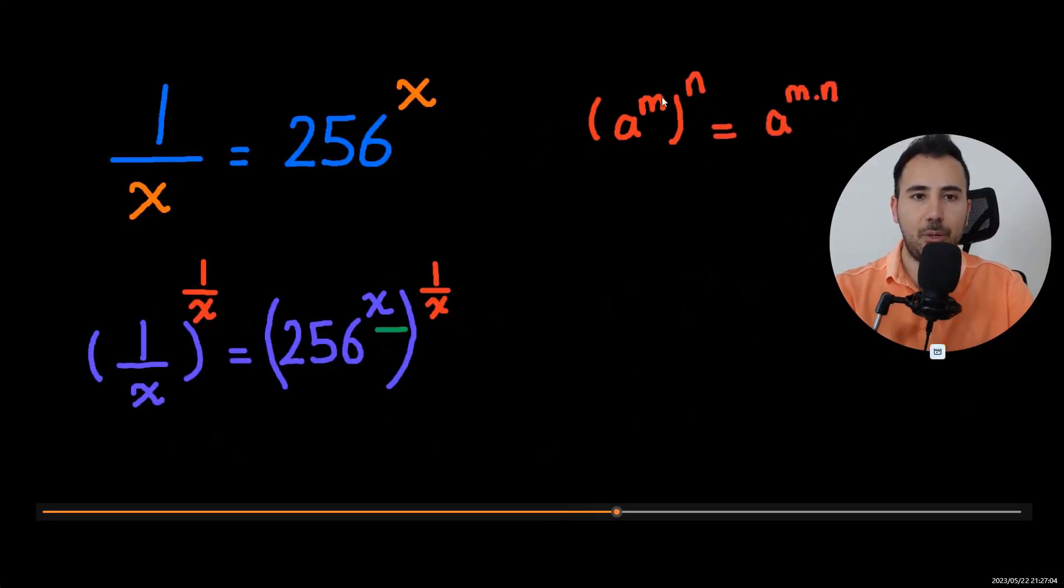All we have to do is multiply m by n. And in this case, x multiplied by 1 over x is 1. And 256 to power of 1 is itself.